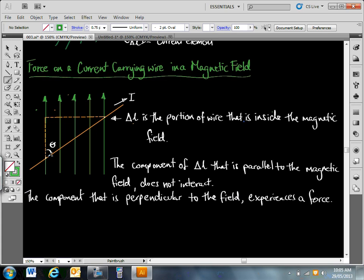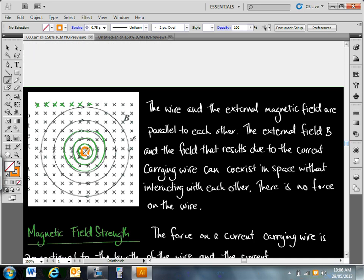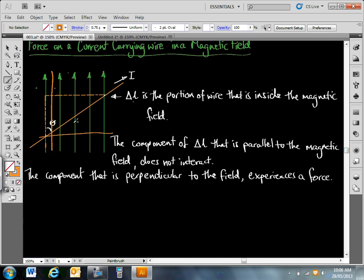And of course, this current element, if this current element we looked at last lesson, if this current element was perpendicular to the field itself, so moving across this way, then we would have maximum force on that wire, or the current element inside the magnetic field. And if the wire was moving, I'll draw it here, parallel to the field, then of course we know from the diagram earlier here that those two magnetic fields can coexist in space without affecting each other. And so a wire parallel to the field will experience no force. So what we say then, between these two, between perpendicular and parallel to that magnetic field, we experience varying degrees of force.